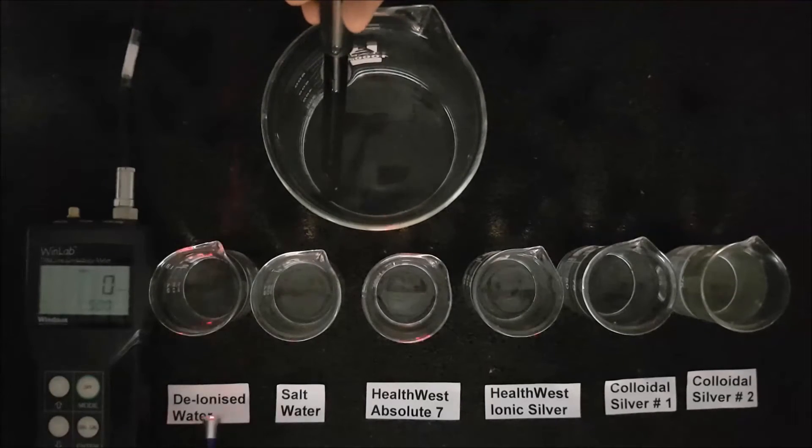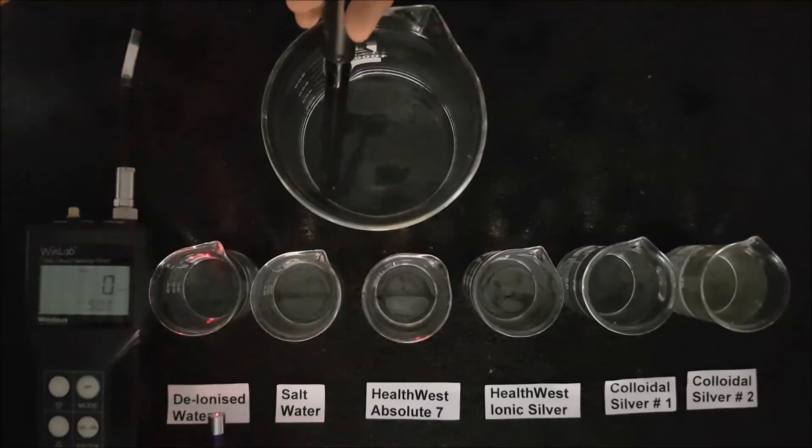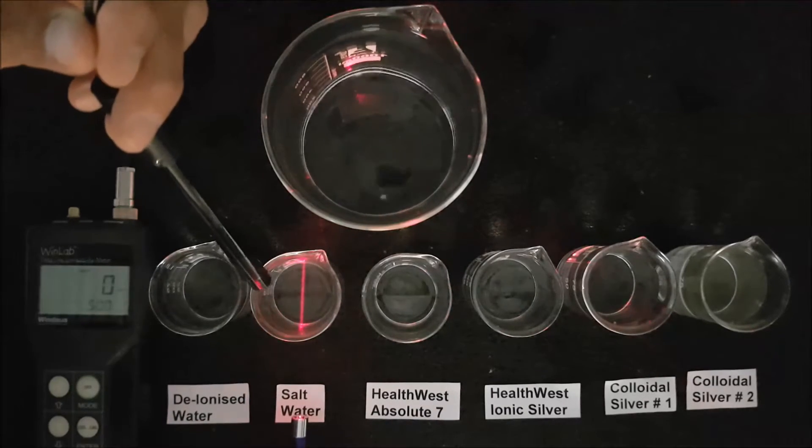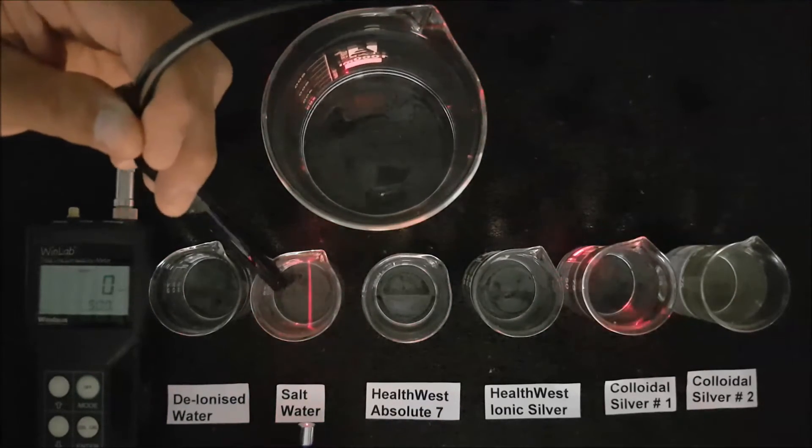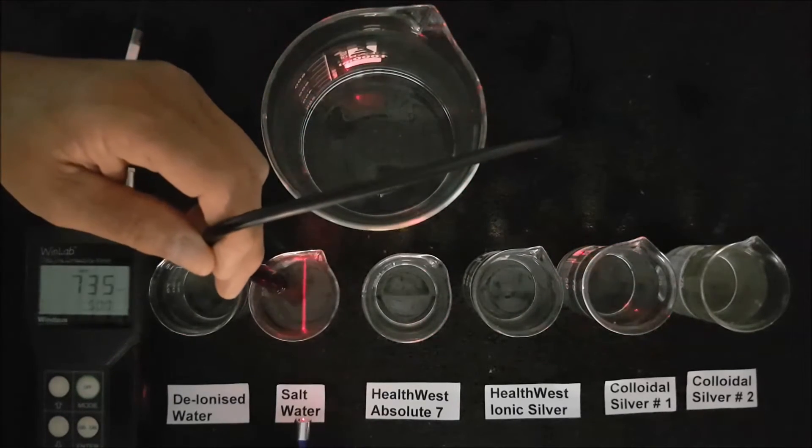The first beaker contains deionised water, to be used as a reference. The second beaker is a salt and water mix, to show what can be seen when a laser is shone through water with impurities in it, in this case salt, with a conductivity of over 700 parts per million.